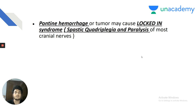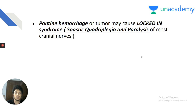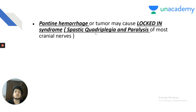Pontine hemorrhage was another option. Pontine hemorrhages or tumors may cause locked-in syndrome — spastic quadriplegia and paralysis of almost all cranial nerves. At the pontomedullary junction, the 6th, 7th and 8th cranial nerves arise. When there is hemiplegia, Babinski is positive on one side; when there is spastic quadriplegia, there is bilateral Babinski positive. Pontine hemorrhage is a very important cause of bilateral Babinski positive.